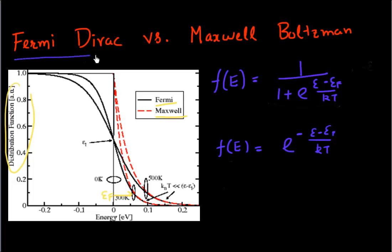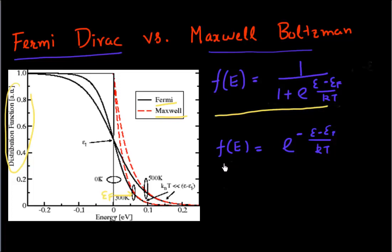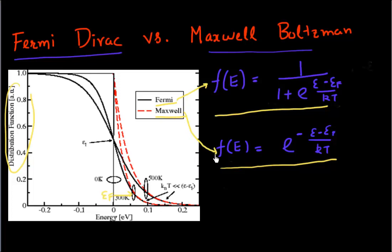Given here is the expression for Fermi-Dirac statistics — this is the probability of occupation using Fermi-Dirac statistics. And this is the probability of occupation when you use Maxwell-Boltzmann statistics. Both of them are plotted here. In this chart, the black curve represents the probability of occupation given by Fermi-Dirac statistics. The dotted line represents the probability of occupation given by Maxwell-Boltzmann statistics.